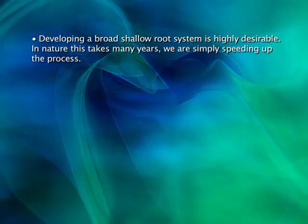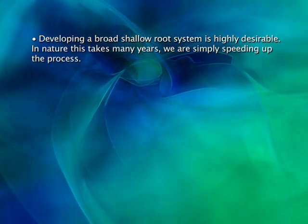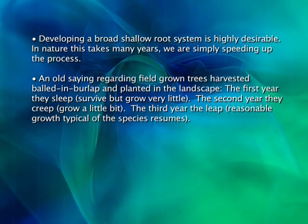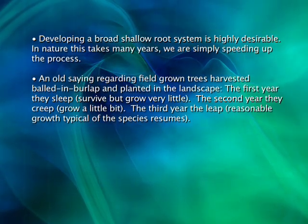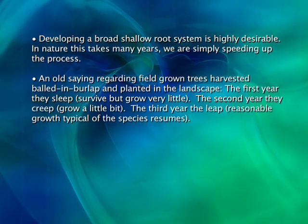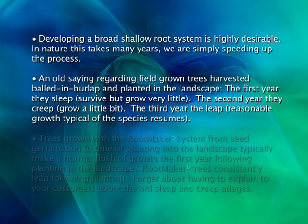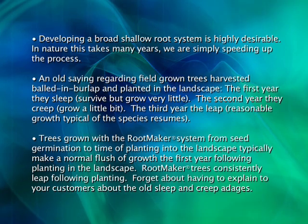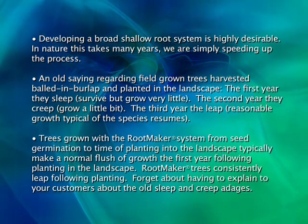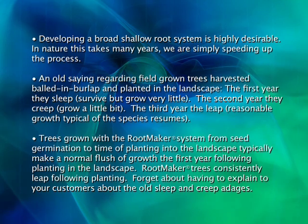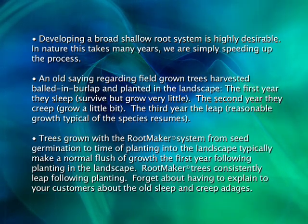Developing a broad shallow root system is highly desirable; in nature this takes many years — we are simply speeding up the process. An old saying regarding field-grown trees harvested balled and burlapped: the first year they sleep — survive but grow very little; the second year they creep — grow a little bit; the third year they leap — reasonable growth typical of the species resumes. Trees grown with the Root Maker system from seed germination to time of planting typically make a normal flush of growth the first year following planting. Root Maker trees consistently leap following planting — forget about having to explain to your customers about the old sleep and creep adages.